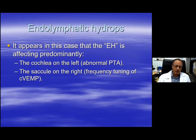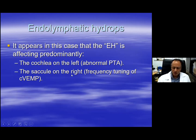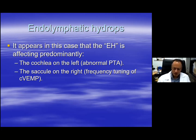Well, one thing that comes to mind is that if you decide to do intra-tympanic steroid injection for these patients, in which ear will you do the steroid injection? Will you do it in the left ear where the audiogram was abnormal, or would you do it in the right ear where the VEMP was abnormal? An interesting question — I don't have an answer yet. Perhaps if the vertigo is the worst symptom for the patient, you may decide to do it on the right, but then you may argue you don't want the hearing to deteriorate on the left. Good arguments — but this is something to consider.